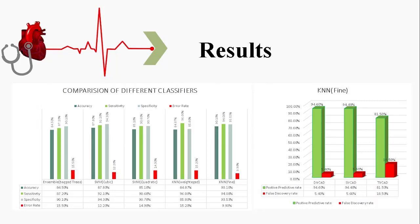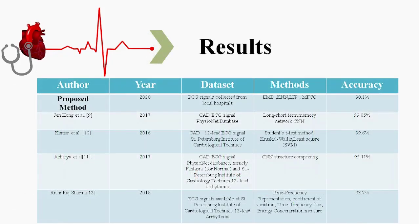We used different classifiers for different combinations of multiple features, and achieved the best accuracy using KNN. The MFCC and LTP features fed into this classifier scored an accuracy of 90.1%. In comparison, cubic SVM achieved 87.8% average accuracy, ensemble bagged tree achieved 84.5%, and quadratic SVM achieved 85.1%. The proposed methodology classifies DVCAD, SVCAD, and TVCAD with 90.1% accuracy, the highest for CAD classification using PCG. We concluded that MFCC combined with LTP and KNN with 10-fold cross-validation gives the best results.